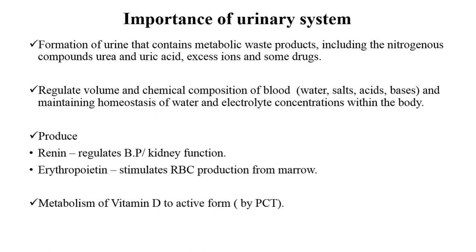Importance of the urinary system: the first and most important function of the urinary system is the formation of urine. The urine formed by the urinary system contains waste products from the metabolic process. The urinary system excretes nitrogenous waste compounds like urea, uric acid, excess salts, and the metabolic waste products of drugs. The urinary system is also important to maintain and regulate the volume of water and blood in our body, and also regulates the electrolyte concentration within the body, thereby maintaining homeostasis.